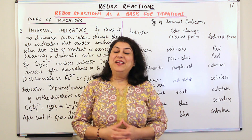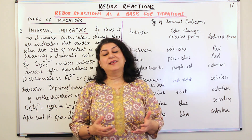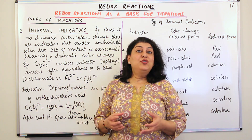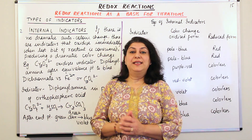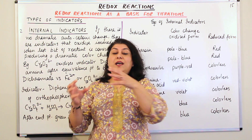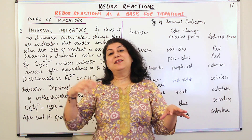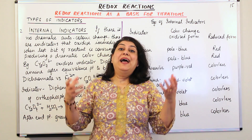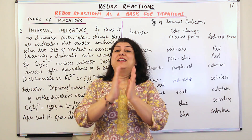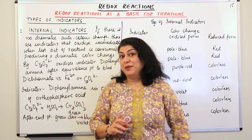Hello, I am Seema and welcome to part 15 of the chapter on redox reactions, and part 2 of the topic 'redox reactions as the basis for titration.' In the previous video we were discussing indicators, and I told you about the first kind: the self indicator. A self indicator is one of the reactants in a redox reaction which undergoes a change in color between its oxidized and reduced forms, indicating its presence or absence. We took the example of potassium permanganate.